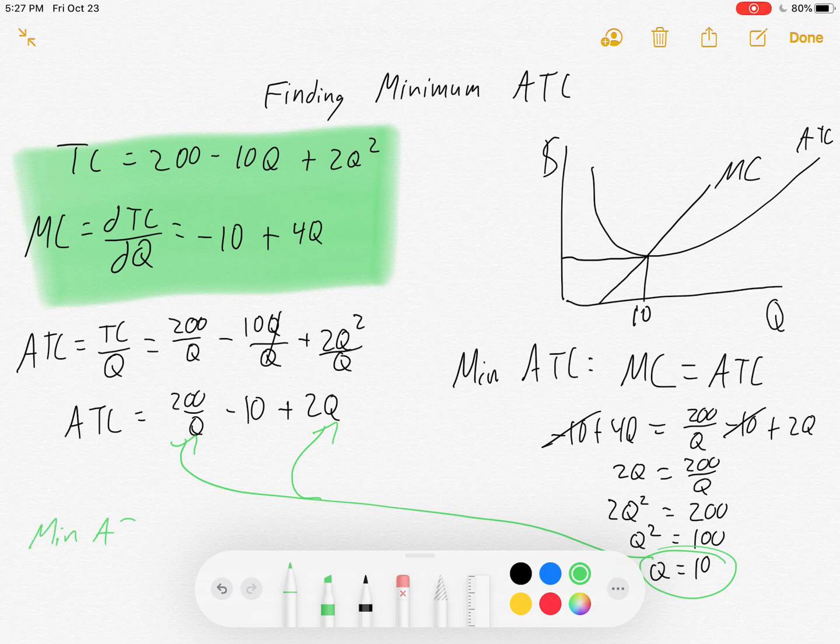So, your minimum average total cost is equal to 200 divided by 10 minus 10 plus 2 times 10. Let's see, that's 20 minus 10 plus 20 is 30. And there is your minimum average total cost.